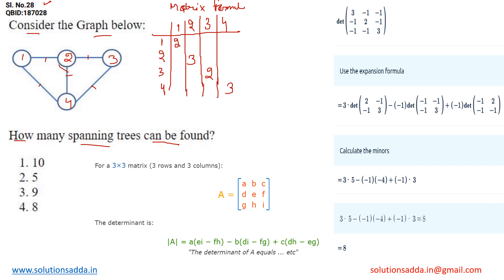Now calculate the edges between the vertices. Between vertices 1 and 2 there is a direct edge, so write minus 1. Between 1 and 3 there is no direct edge, so write 0. Between 1 and 4 there is a direct edge, so write minus 1. Between 2 and 3 there is a direct edge, write minus 1. Between 2 and 4 there is a direct edge, write minus 1.